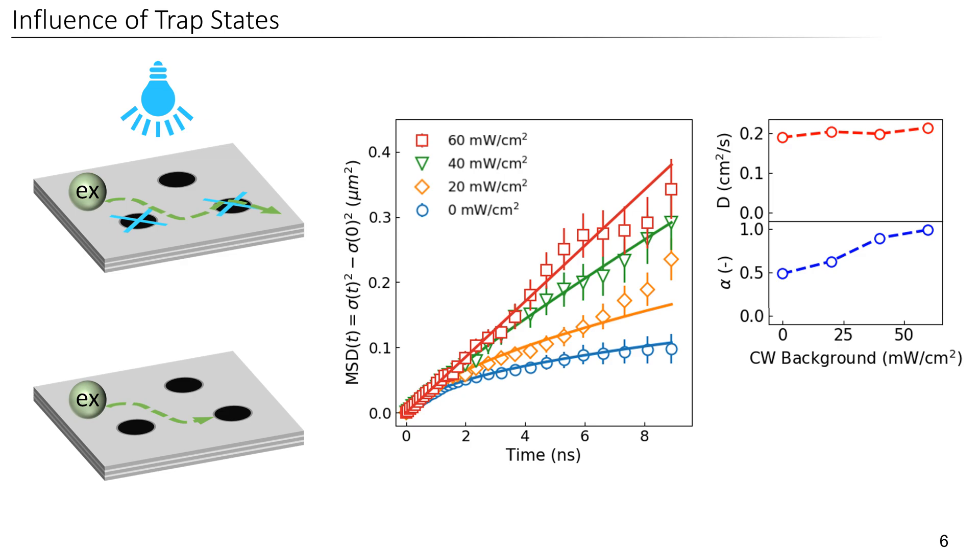On the other hand, we don't observe any change in diffusivity at early times, no matter the background illumination intensity. And this suggests that the early times are unaffected by trapping sites. One very interesting thing to highlight is that the intensity used where we don't see any influence of the traps is equivalent to only around two suns of illumination intensity, which indicates that trap state filling is very efficient in 2D perovskites.